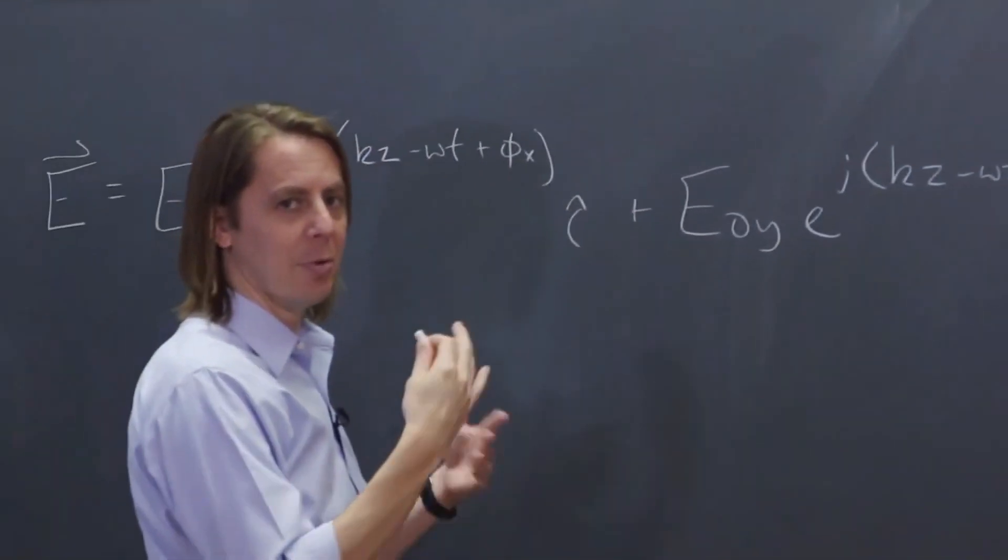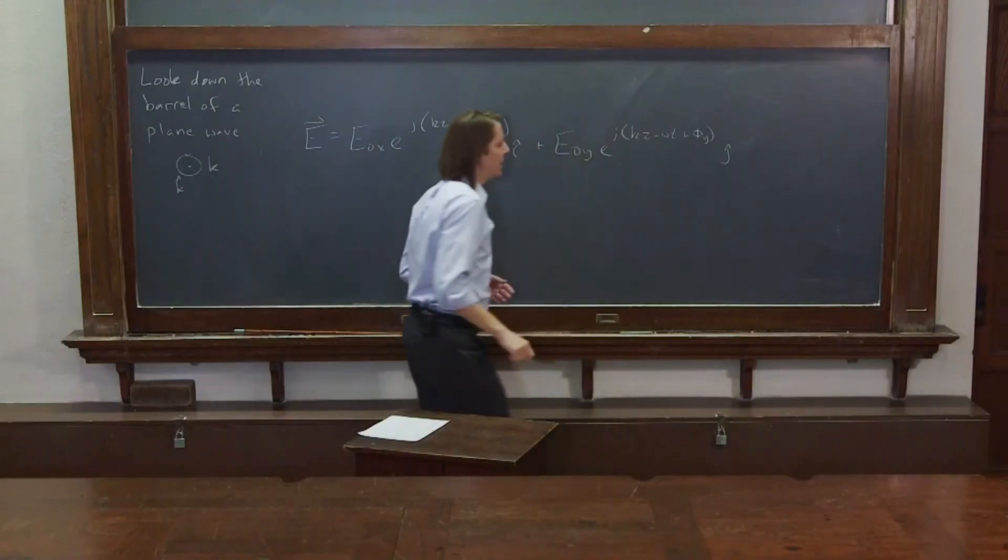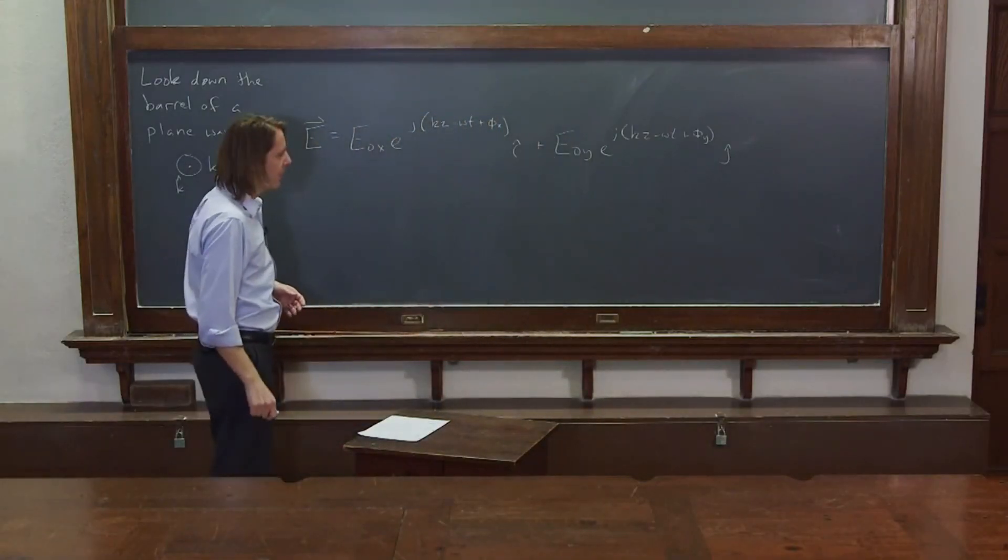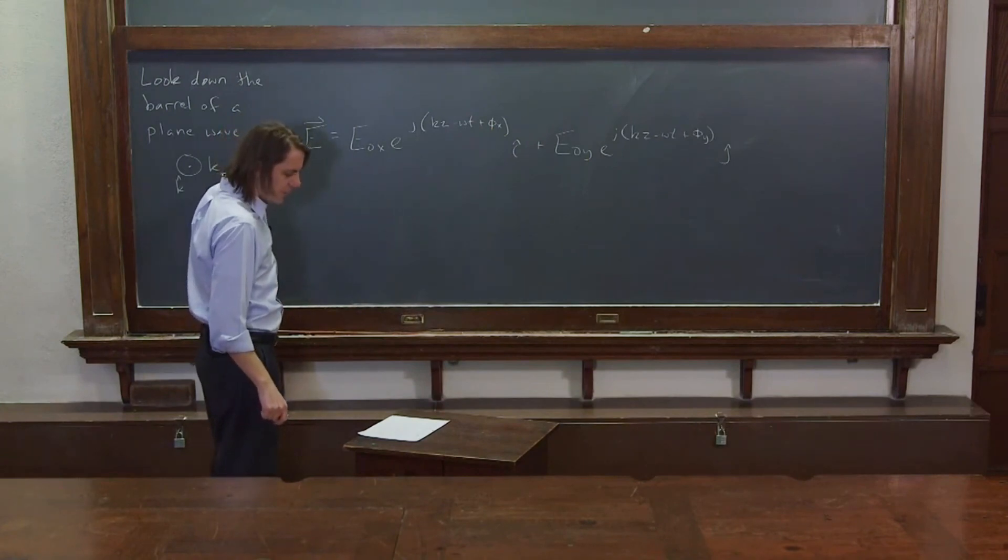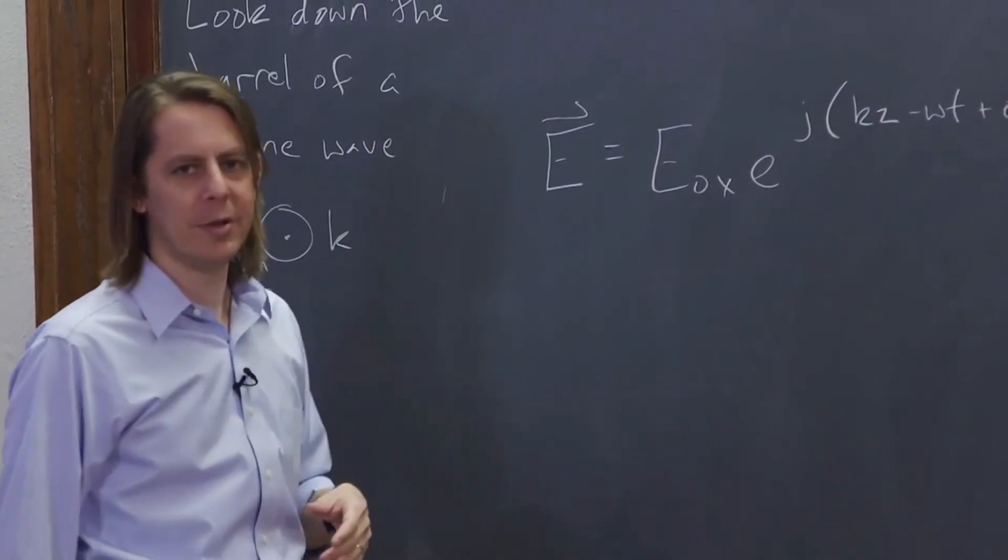Now in principle, you could set one equal to zero and just keep up with the other, but for now, we're going to keep up with both of them, j-hat. So this would be the full mathematical way to write the wave, but let's think about other ways we could write it.